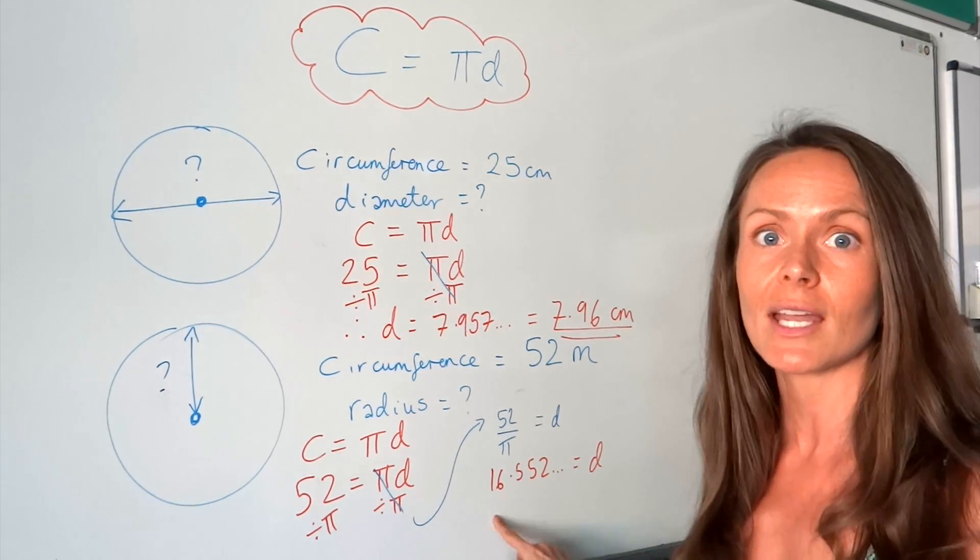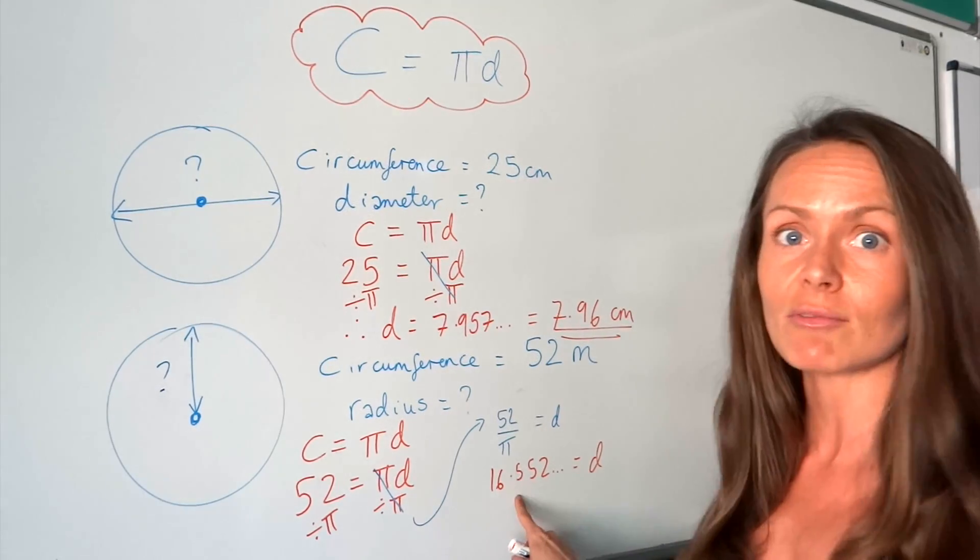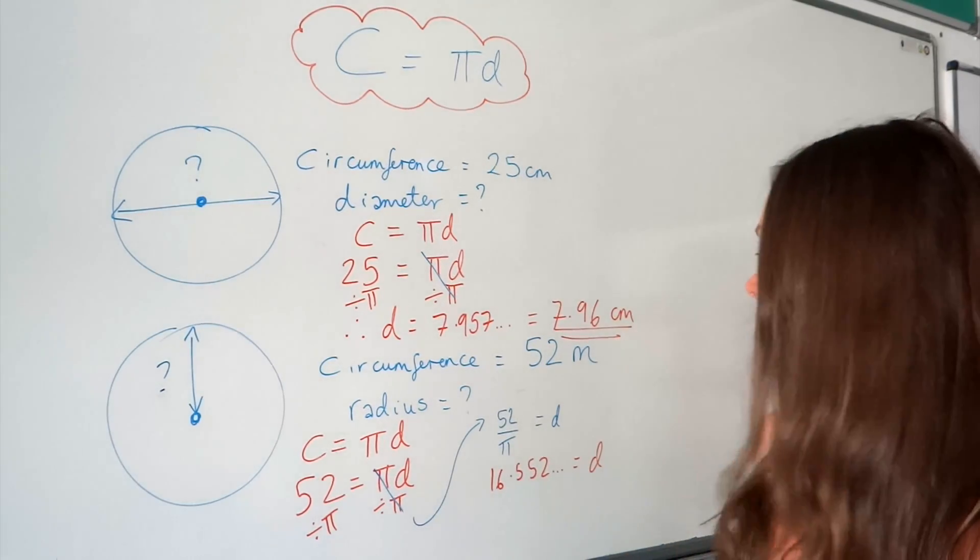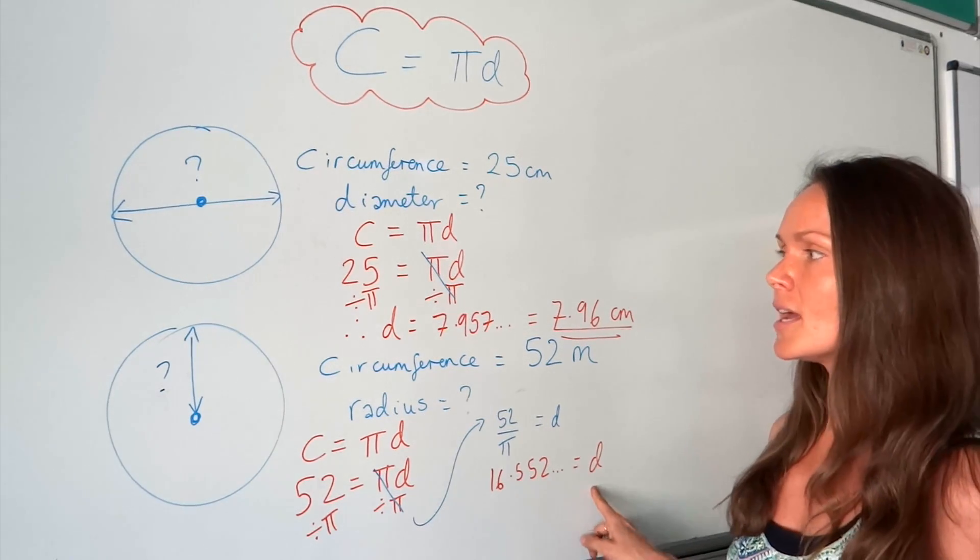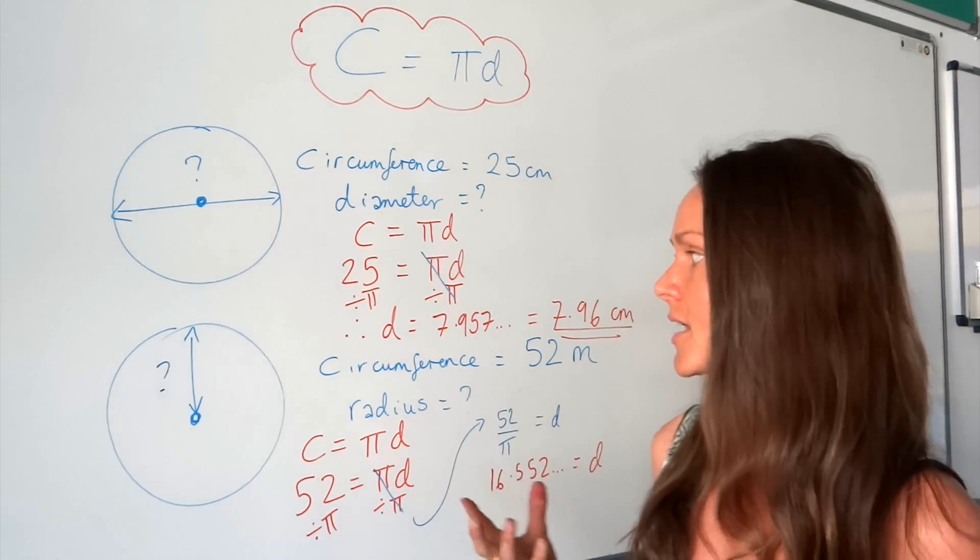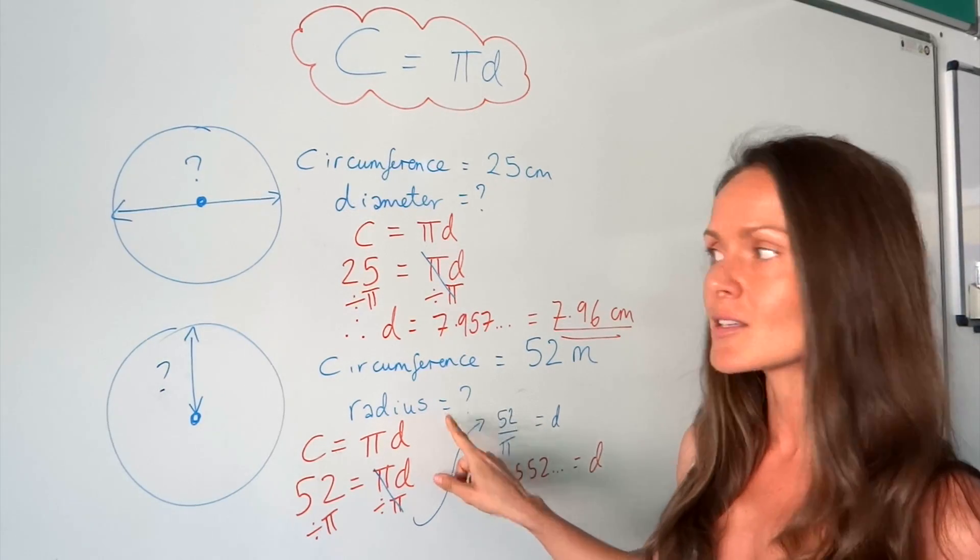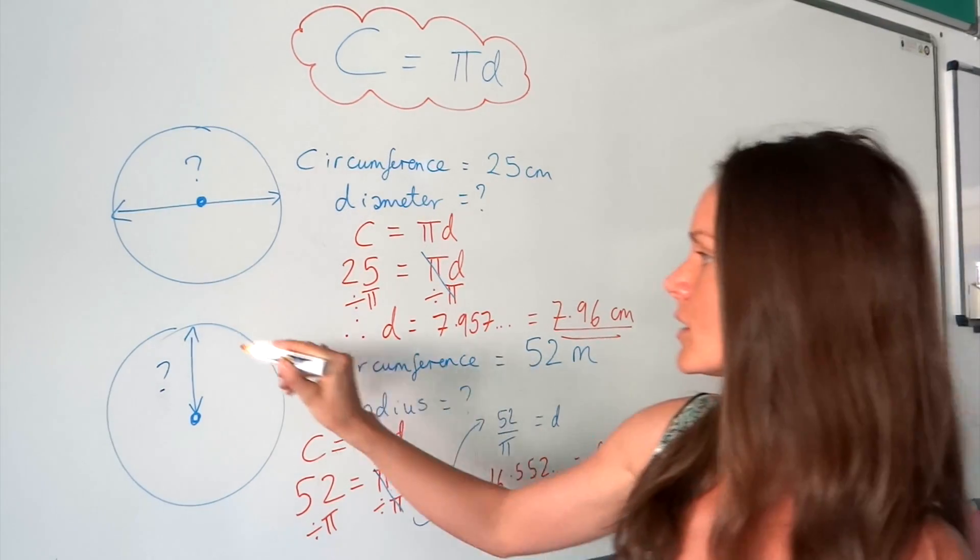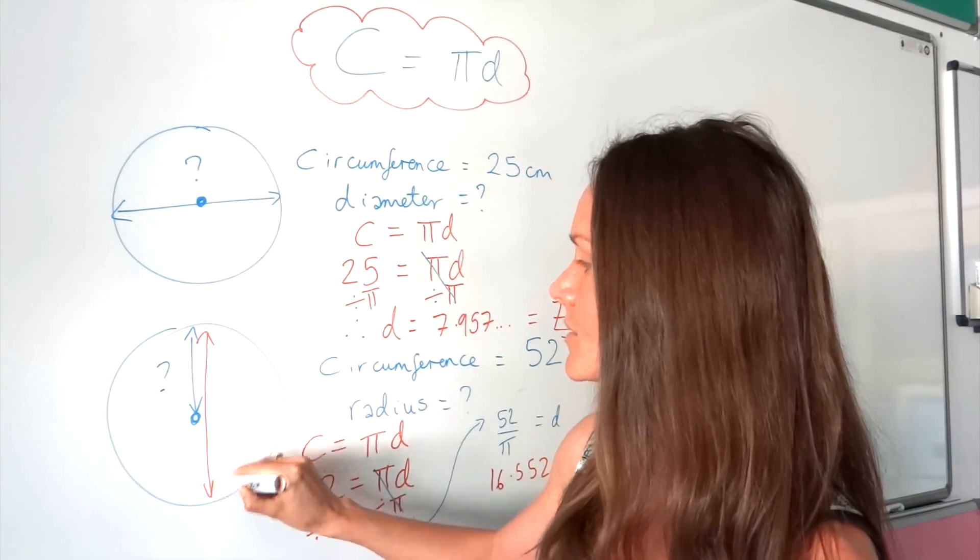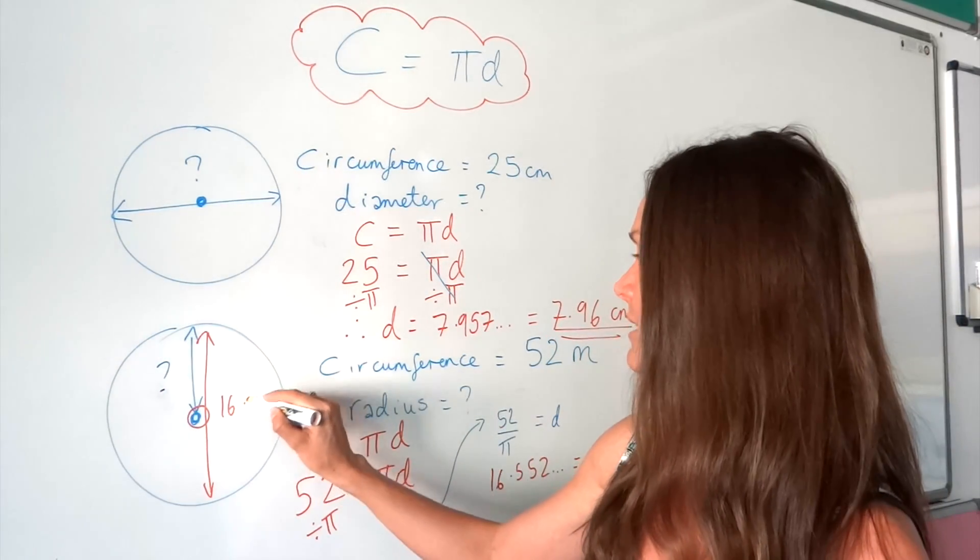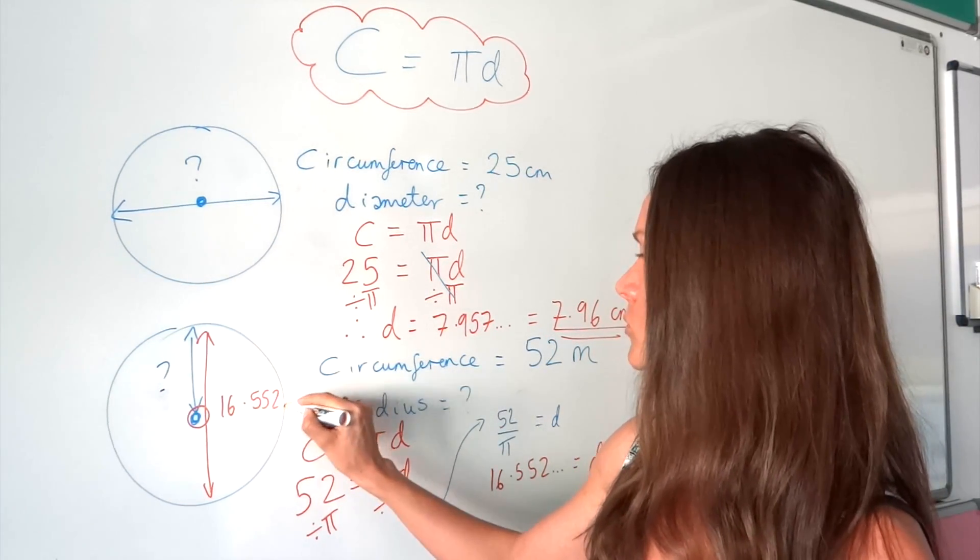It gives me 16.552... Leave that answer on your calculator screen. We don't want to start rounding during the question because we want our answer at the end to be really accurate. So this is the diameter. Let's remind ourselves what it's actually asking for in this question. It says find the radius. Well, we've just worked out the diameter, which is the distance all the way across the shape.